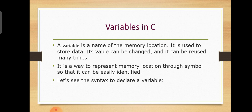Why is it called a variable? It is also called a location, because among different memory locations we store data. Its value can be changed and it can be reused many times. It is used to represent a memory location through symbols so that it can be easily identified.